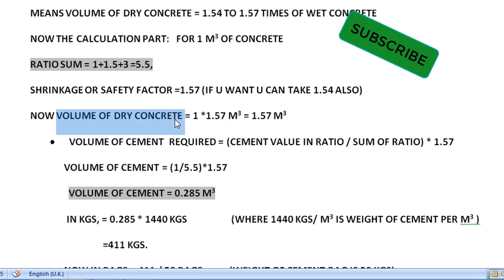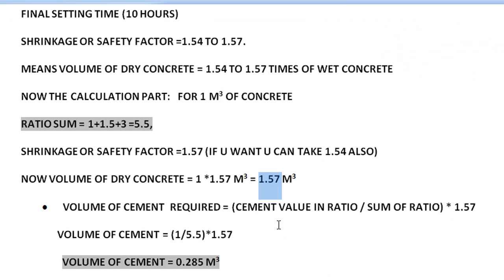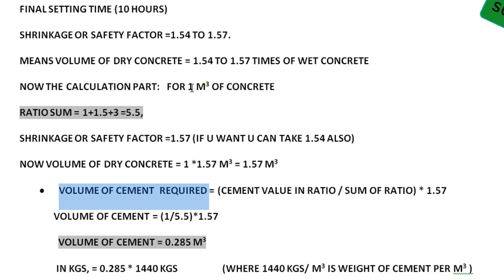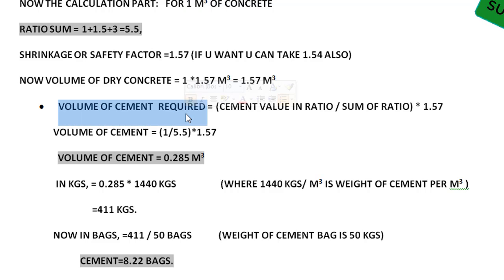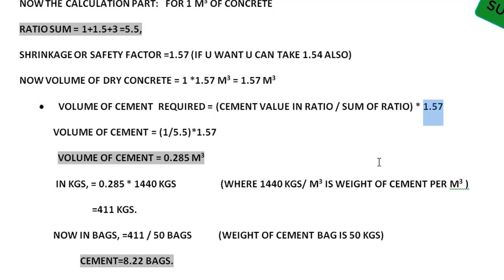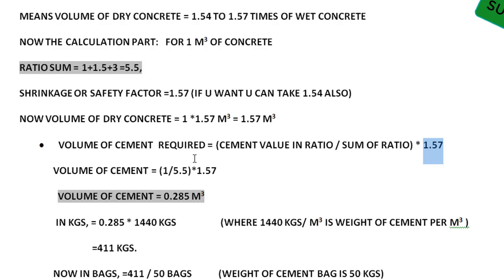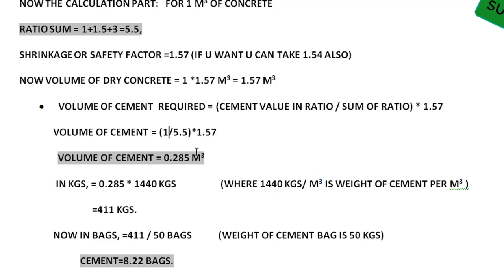The volume of dry concrete is 1.57 cubic meters. Now we have to calculate the volume of cement required. The formula is: cement value in ratio divided by sum of ratio, multiplied by 1.57. This calculation is done for one cubic meter of concrete. The cement value in ratio is 1, and the sum of ratio is 5.5. So: (1 / 5.5) × 1.57 = 0.285 cubic meters of cement.